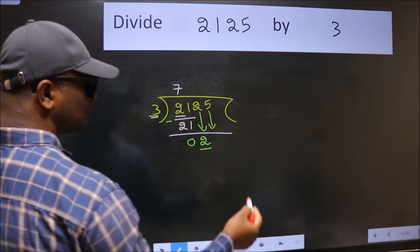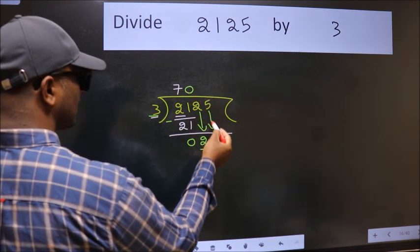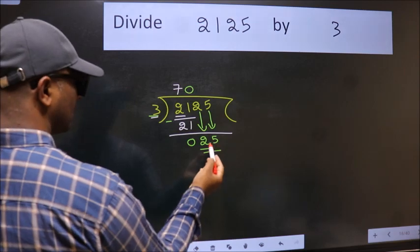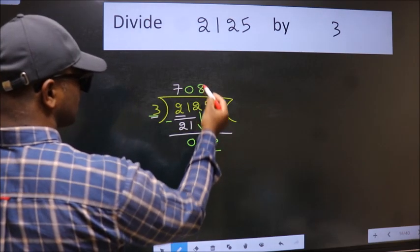And the rule to bring down the second number is put 0 here. Then only we can bring this number down. So 25. A number close to 25 in 3 table is 3 times 8, which is 24.